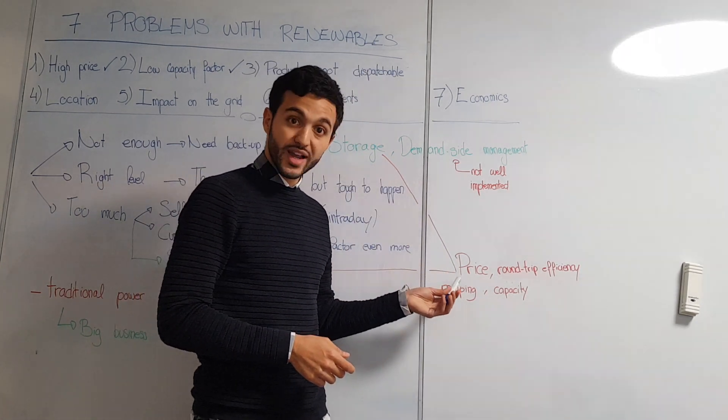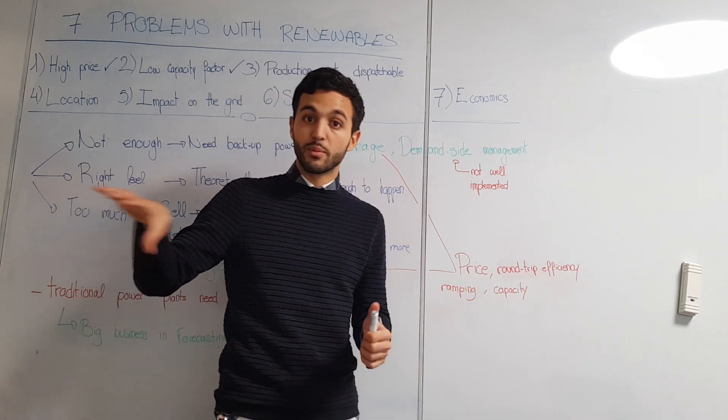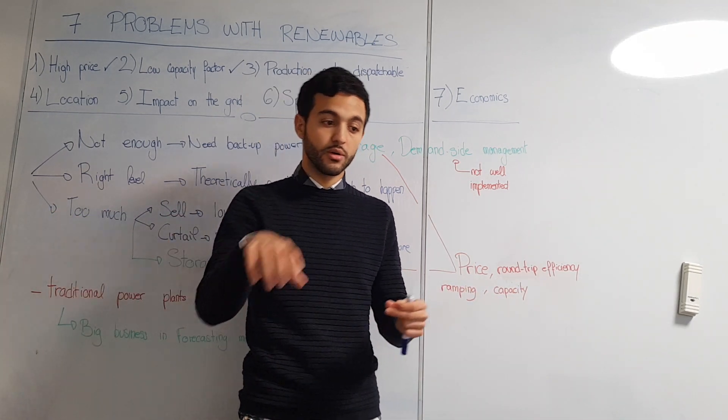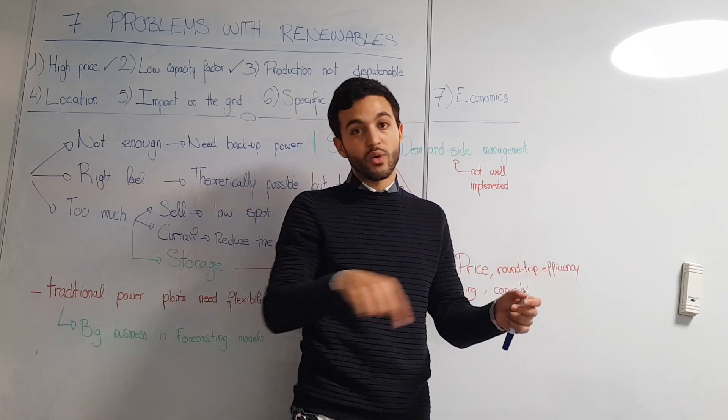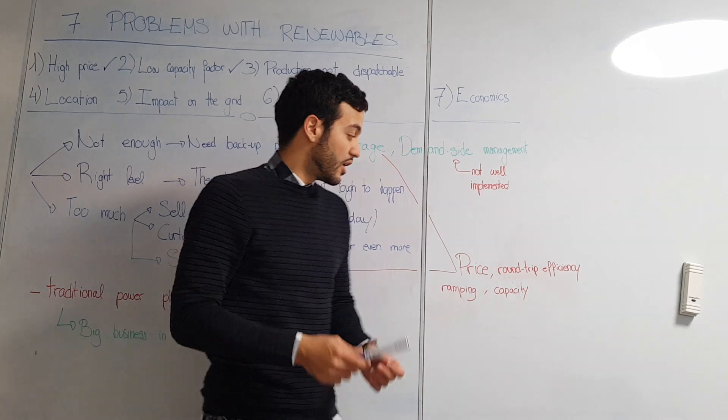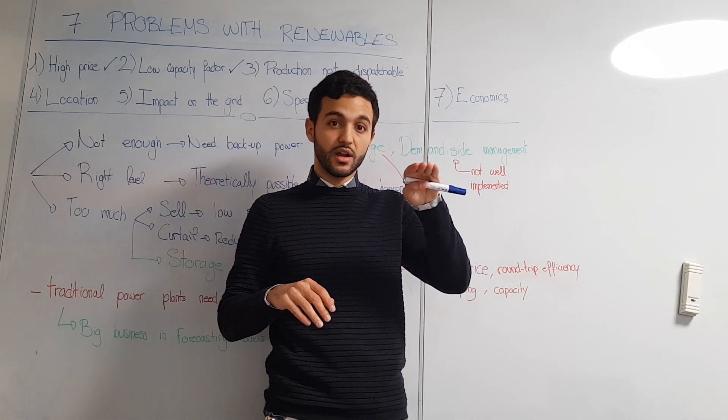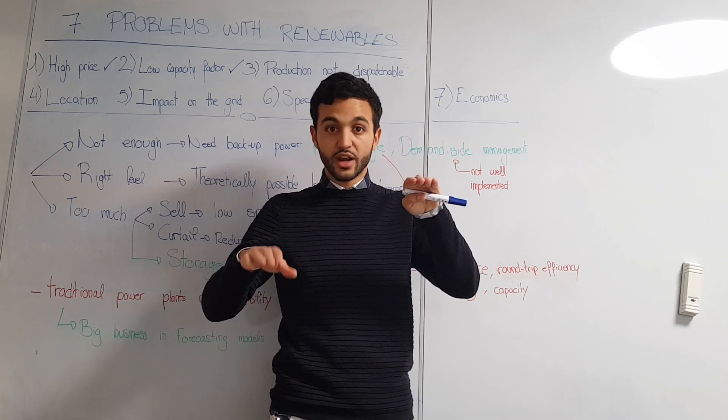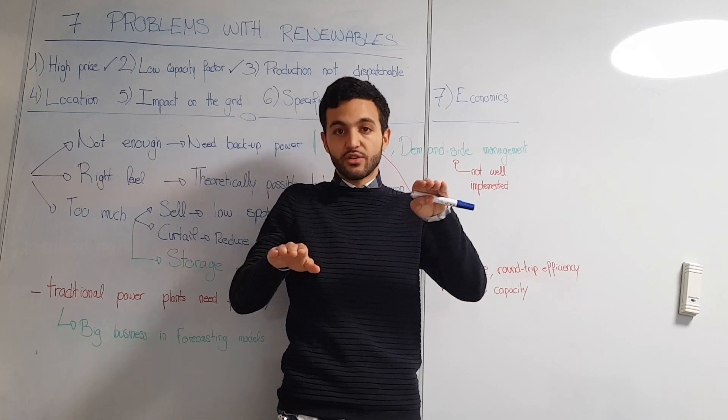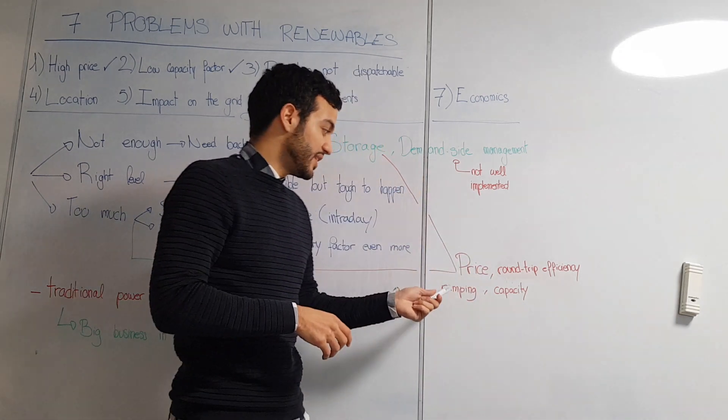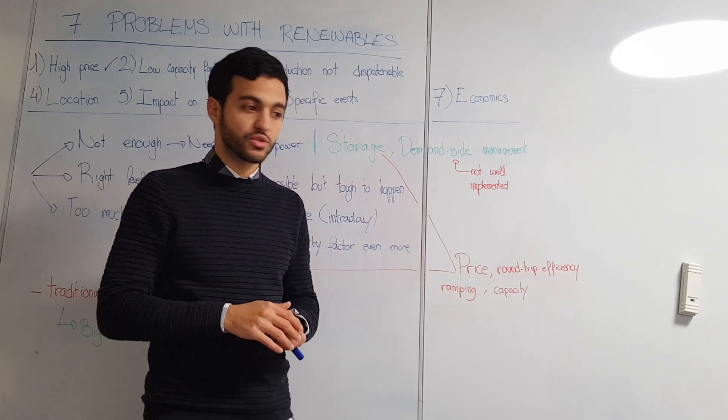With storage you have other parameters which are really important. For example the price of storage, the round-trip efficiency. If you absorb 100 kilowatt hours, stock it, then release it and only have 30 kilowatt hours, the round-trip efficiency is very low. Then the ramping is also very important. If we have this consumption and I tell you release your storage right now, but you can only release with this curve, that's also very important. And finally the capacity - how much quantity of energy can you store.